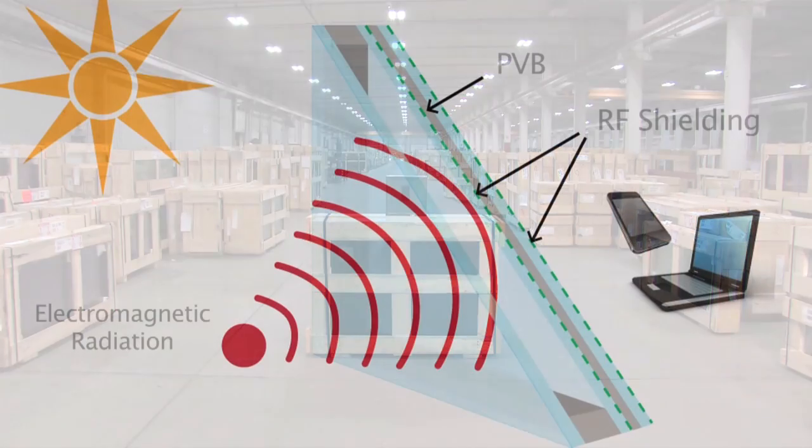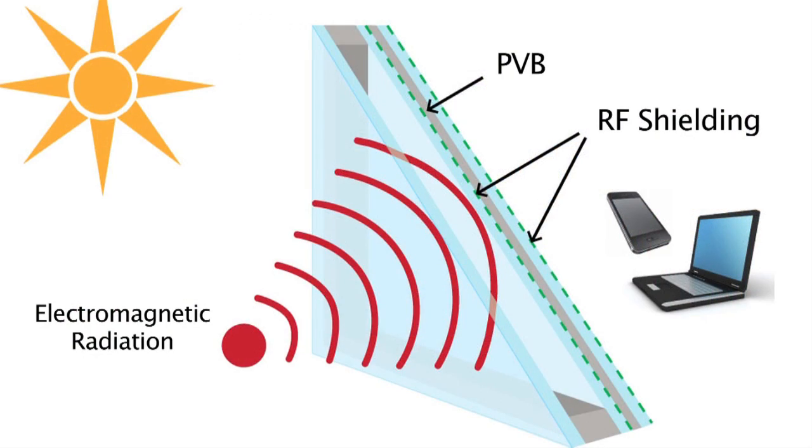The isometric corner section reveals where the protective coating is located on the insulated glass unit and illustrates how the coating dramatically reduces the transmission of radiofrequency electromagnetic radiation.